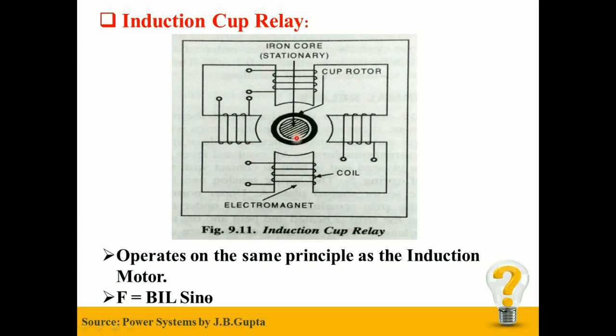The rotor is a hollow metallic cylinder cup which is free to rotate in the air gap between the electromagnets and stationary iron core. The rotating magnetic field is produced by two pairs of coils wound on four poles.